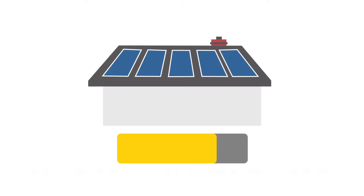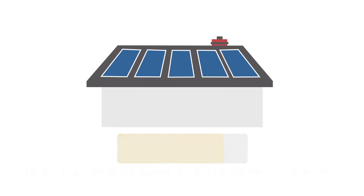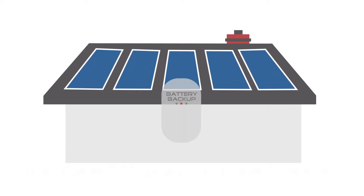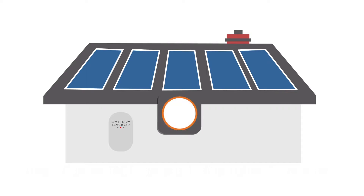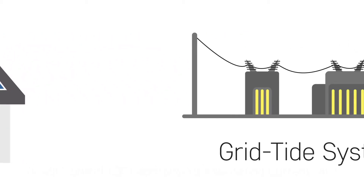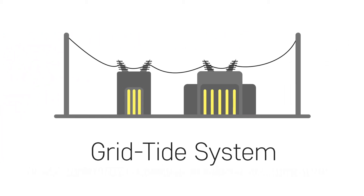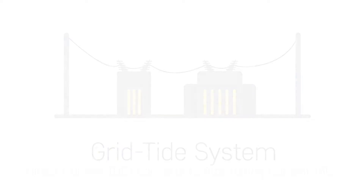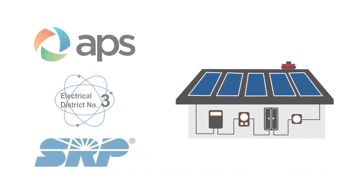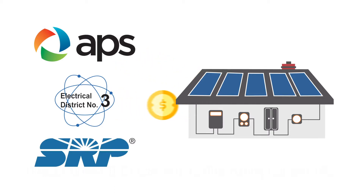Now the interesting thing about grid-tied systems is that if you do not use all the electricity on the property — since it is not connected to a battery backup — that extra electricity that's not being used goes back through your main meter, which is already on the home, and travels back into the grid. We call this a grid-tied system.